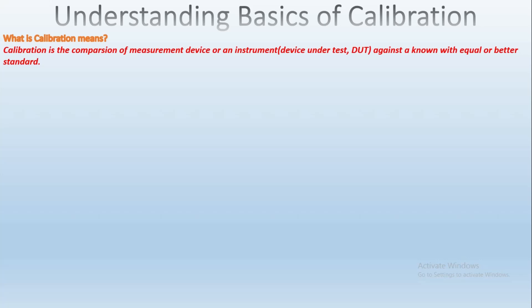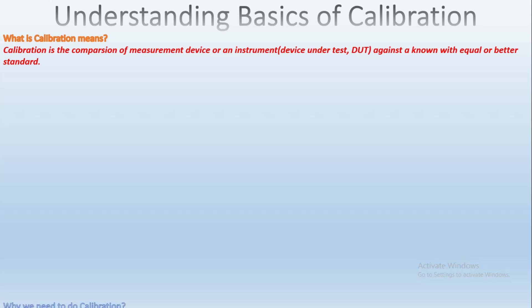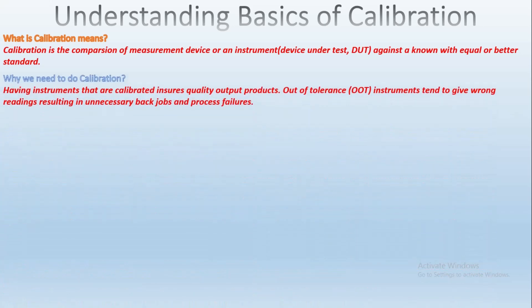One would calibrate the device under test to know how far it deviates from the standard. Do you know why we need to calibrate? Having instruments that are calibrated ensures quality output products. Out of tolerance — that is OOT — instruments tend to give wrong readings, resulting in unnecessary back jobs and process failures.